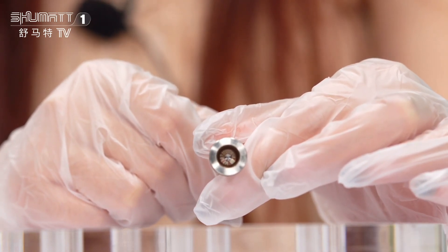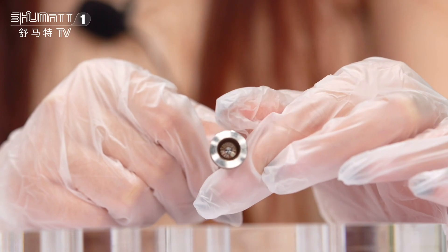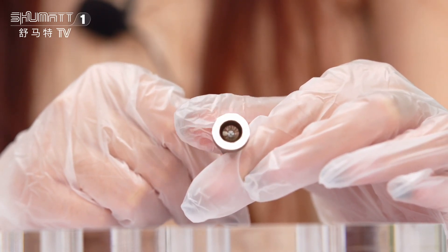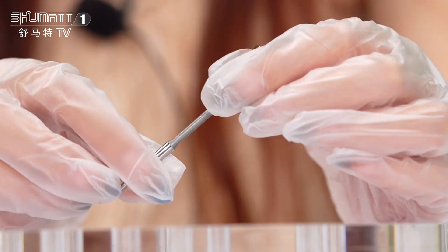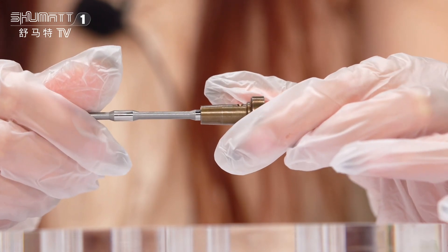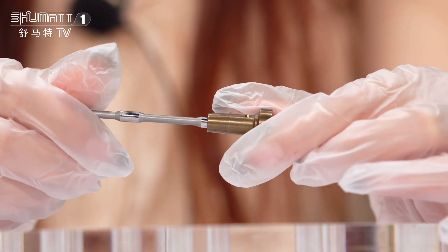If you want to clean the valve assembly, first step, make sure the valve cap and the valve rod are in the right position. Clean it using oil, don't use water.